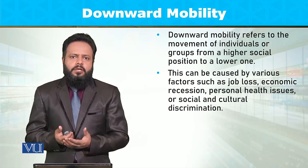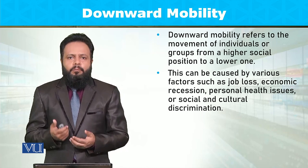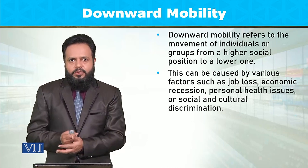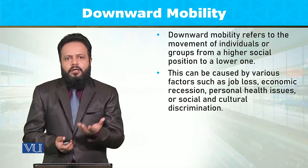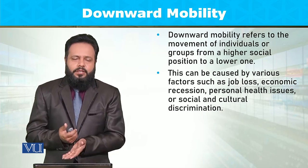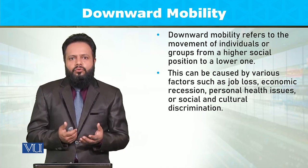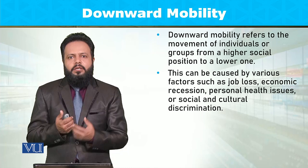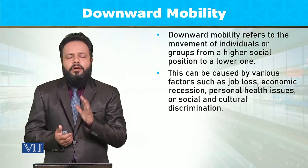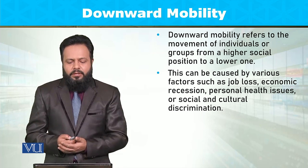بہت سے social اور cultural discriminatory factors ہوتے ہیں جن کی وجہ سے downward social mobility کی possibilities بڑھ جاتی ہیں۔ مثلاً ایک ethnicity کے لوگ اگر کسی دوسری ethnicity کے geographic area میں business یا کام کرنا چاہیں تو وہاں کے لوگ resist کرتے ہیں۔ اسی طرح ایک خاص sect کے لوگ جب کہیں کام کرنا چاہیں تو majority sect کے لوگ بھی resist کر سکتے ہیں، جس سے downward social mobility پیدا ہو جاتی ہے۔